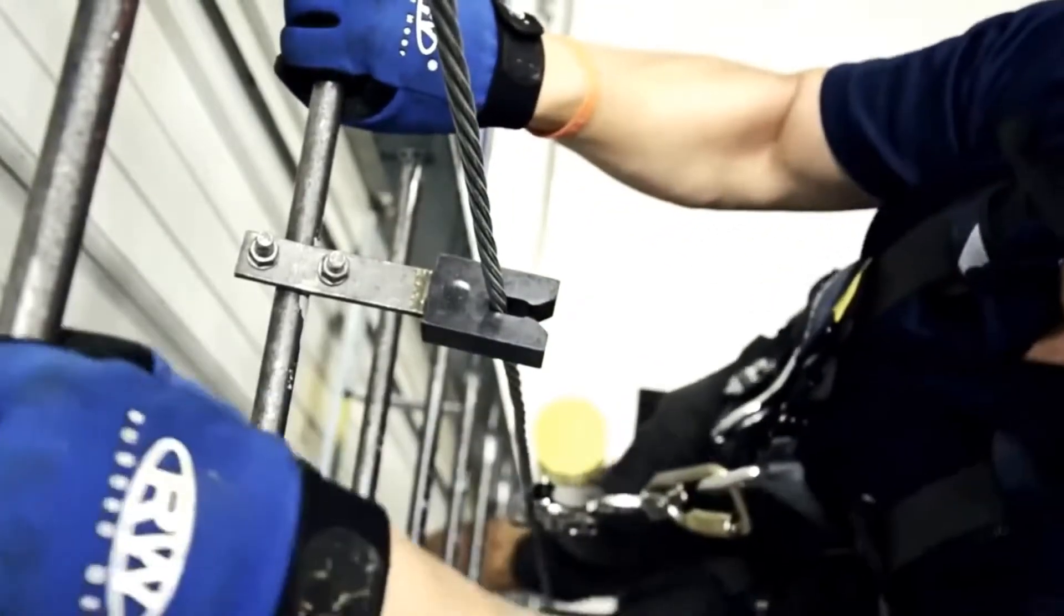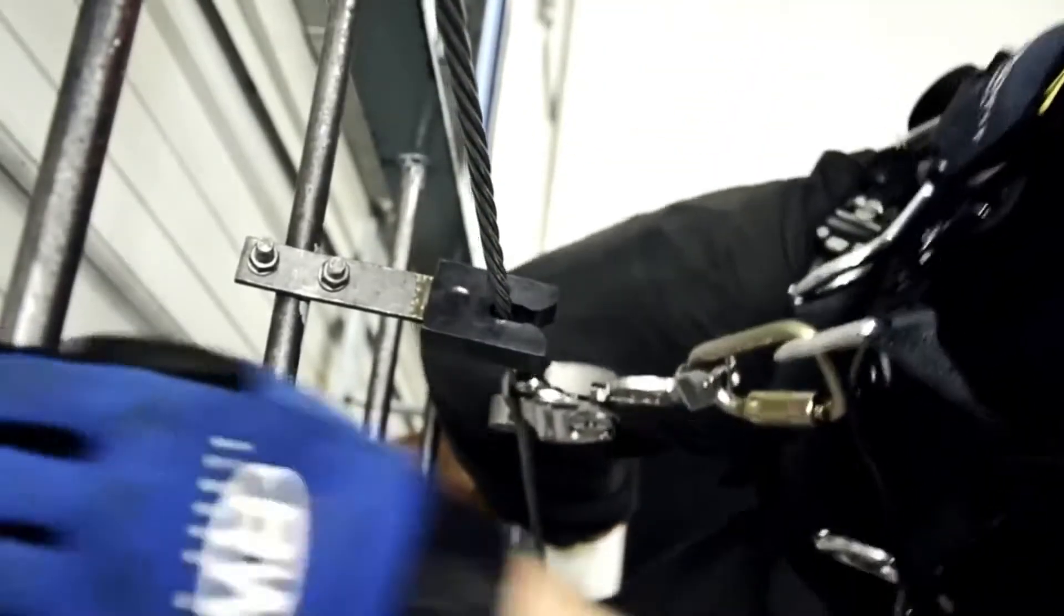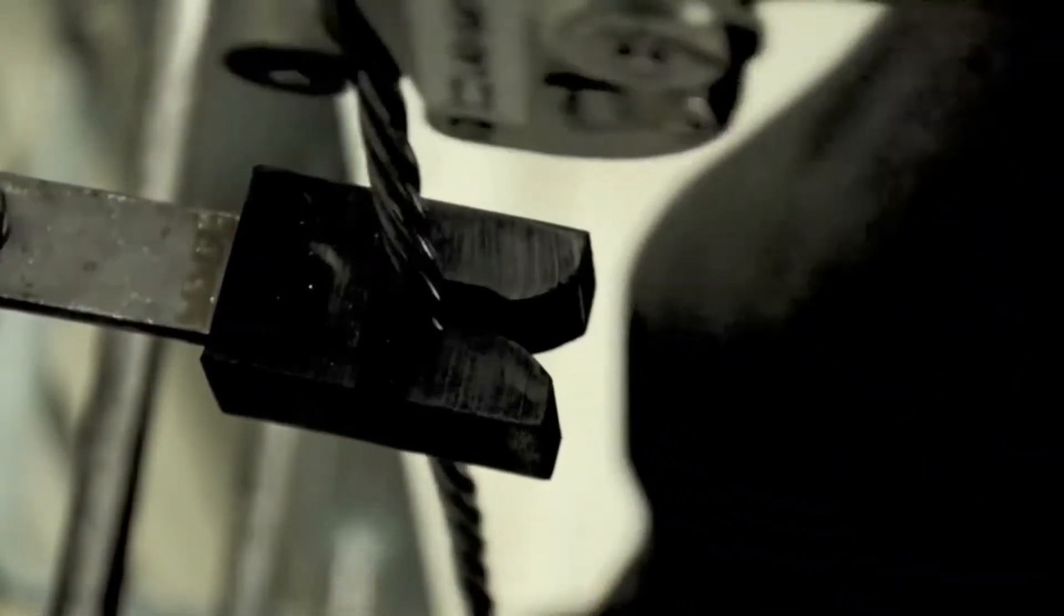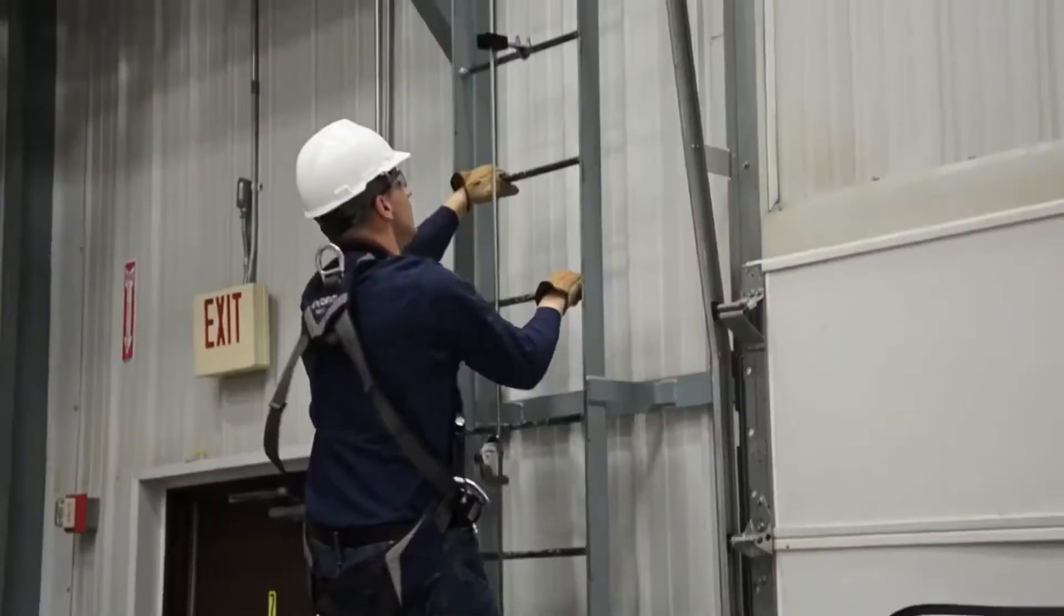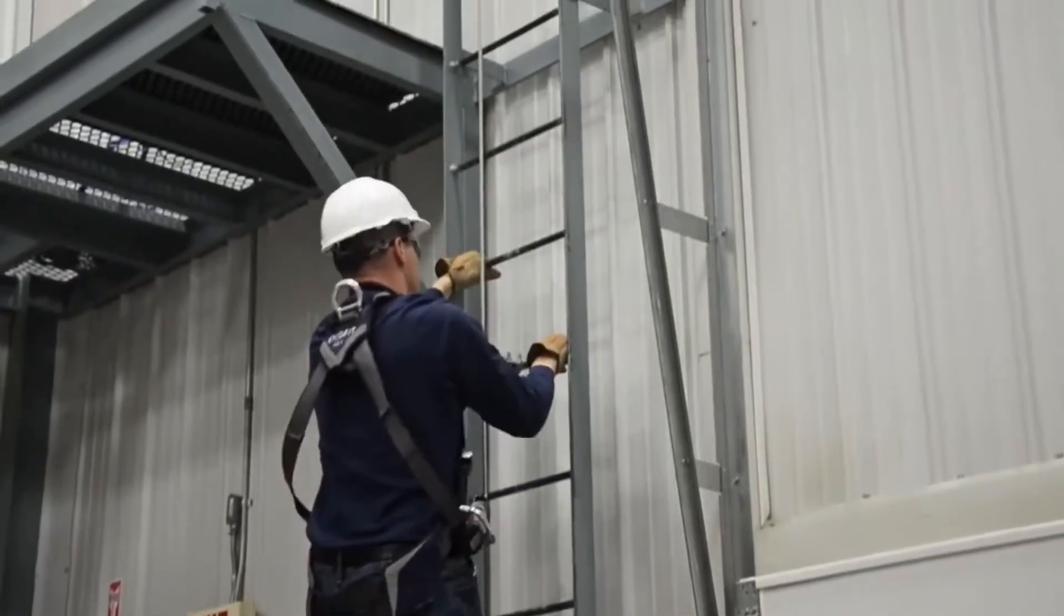Install cable guides approximately every 25 feet along the carrier cable. Be sure that the cable will not abrade against the structure. Additional cable guides can be added when needed to prevent this.